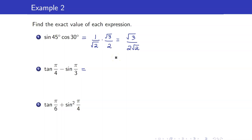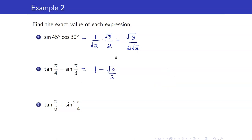Next, tangent of pi over 4 is 1. Pi over 4 is 45 degrees. Minus sine of pi over 3 — pi over 3 is 60 degrees — sine of pi over 3 is equal to square root of 3 over 2. So that's 2 minus square root of 3, all over 2.